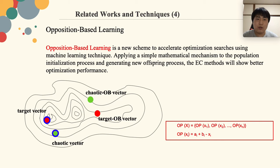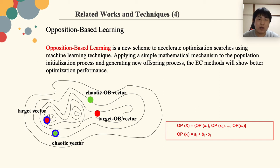Opposition-based learning is a new scheme to accelerate optimization searches using a machine learning technique, applying a simple mathematical mechanism to the population initialization process and the generating new offspring process. As shown in this picture, from the fitness landscape, we can find that the target vector is located in a local optimal. If we set the search range as a large value, the acceleration speed will become very slow. In contrast, if we set the search range as a small value, the target vector will always be trapped into premature convergence. To solve this problem, we propose to apply the opposition-based learning mechanism, so we can finally approach the global optimal step-by-step.